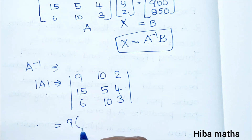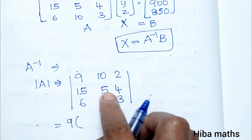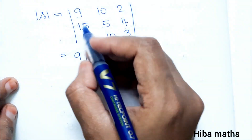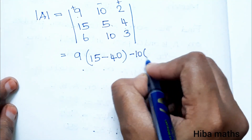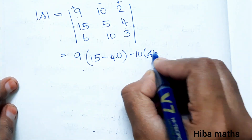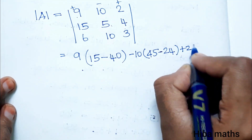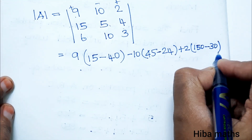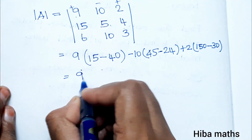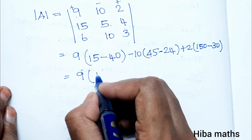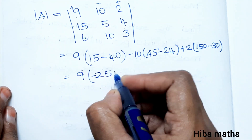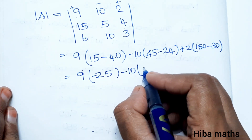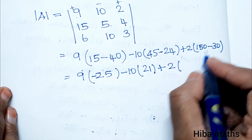Expanding along the first row: 9 times (5×3 minus 10×4), giving 9(15 minus 40) = 9(−25). Minus 10 times (15×3 minus 6×4), giving −10(45 minus 24) = −10(21). Plus 2 times (15×10 minus 6×5), giving 2(150 minus 30) = 2(120).